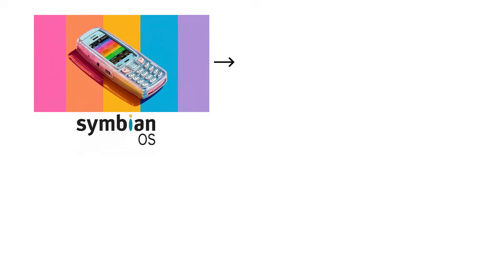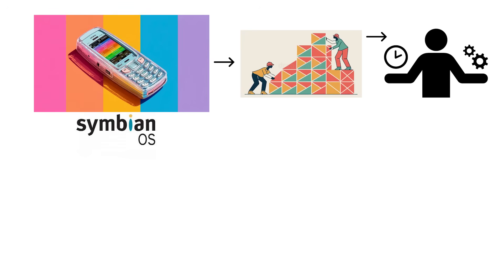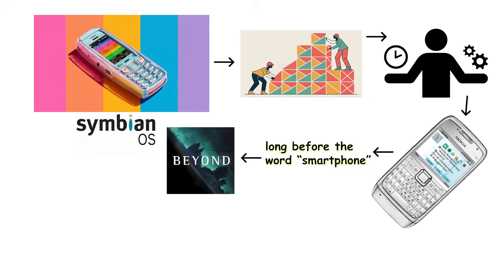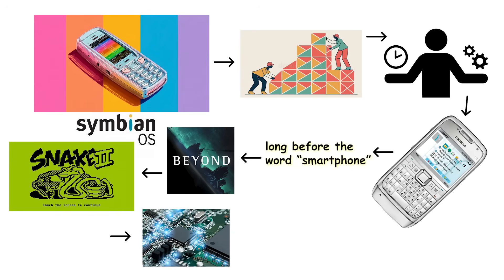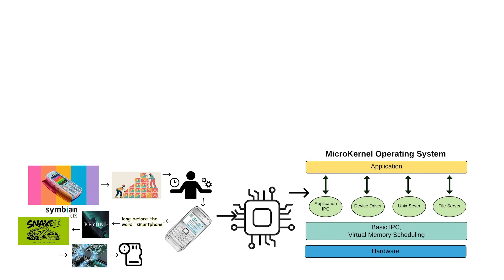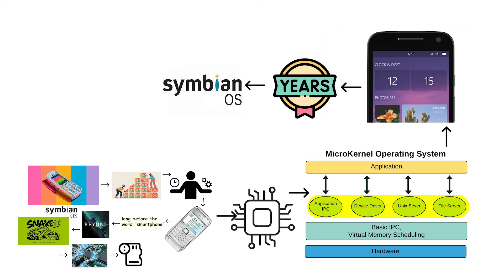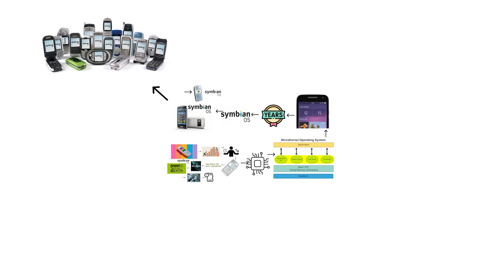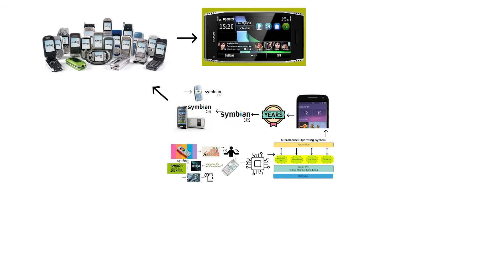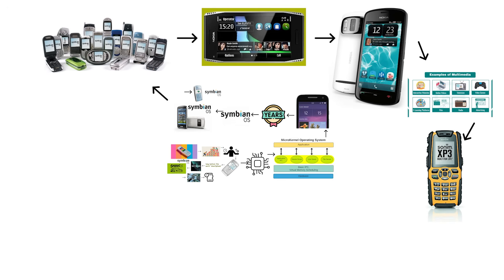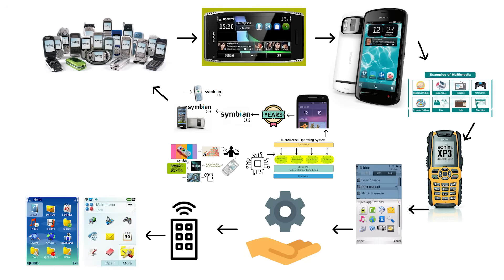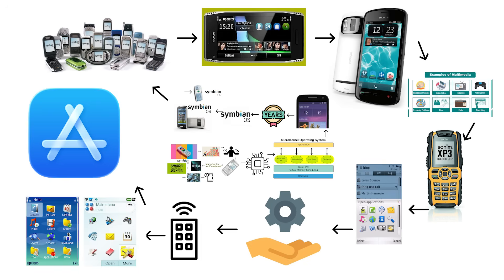Symbian OS began as a joint industry effort to build a powerful, efficient operating system for early smartphones, long before the word smartphone meant anything beyond your phone can install Snake 2. It was engineered for devices with extremely limited memory and low-power processors. To achieve this, Symbian used a microkernel architecture and an event-driven design that allowed it to run multiple applications on hardware that would struggle to load a modern lock screen. For years, Symbian dominated the global smartphone market. Nokia, Sony Ericsson, and other major manufacturers built entire product lines around it. Symbian powered business phones, camera phones, multimedia devices, and rugged enterprise handsets. The system supported multitasking, background services, advanced telephony controls, and even early forms of app installation, long before the concept of an app store existed.